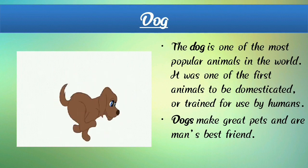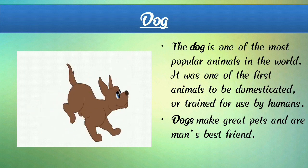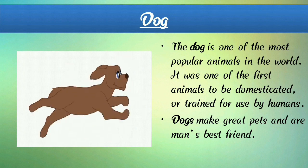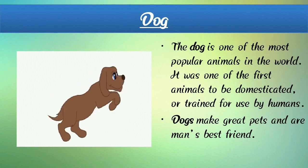Dog is one of the most popular animals in the world and was one of the first animals to be domesticated or trained for use by humans. Dogs make great pets and are man's best friend. Children, you are all familiar with dogs — dogs are a man's best friend and we all become as faithful as a dog. Now we are going to learn our next slide.